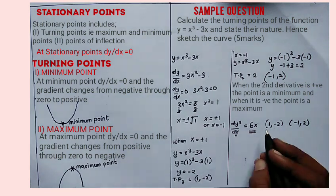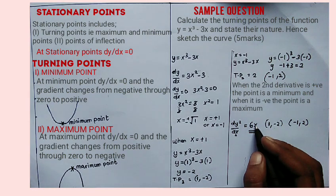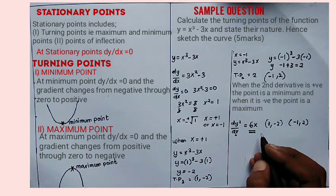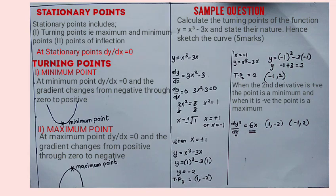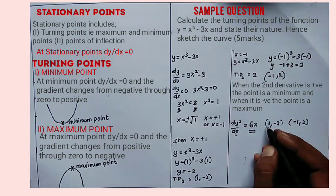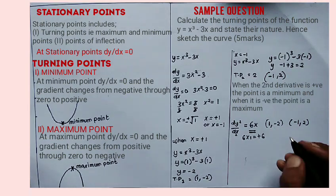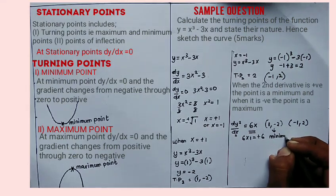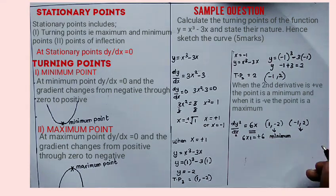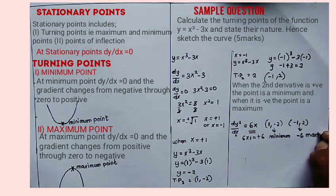To determine the nature, substitute the value of x into the second derivative. If the result is a positive number, the point is a minimum. If it becomes a negative number, the point is a maximum. Substituting x equals 1: 6 times 1 is positive 6, so this point is a minimum. Substituting x equals negative 1: 6 times negative 1 is negative 6, so that is a maximum point.